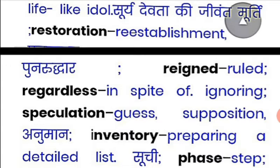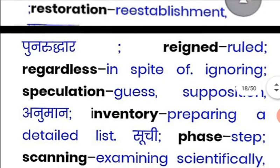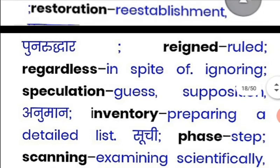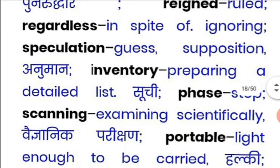'Regardless' means in spite of something — to ignore something. 'Speculation' means to guess or estimate. 'Inventory' means preparing a detailed list. 'Phase' means step — how many steps or phases there are.